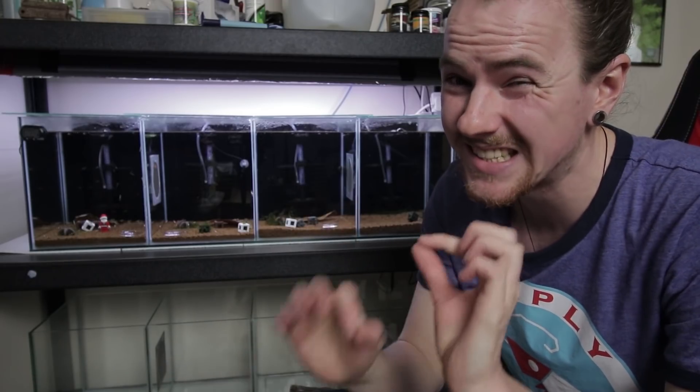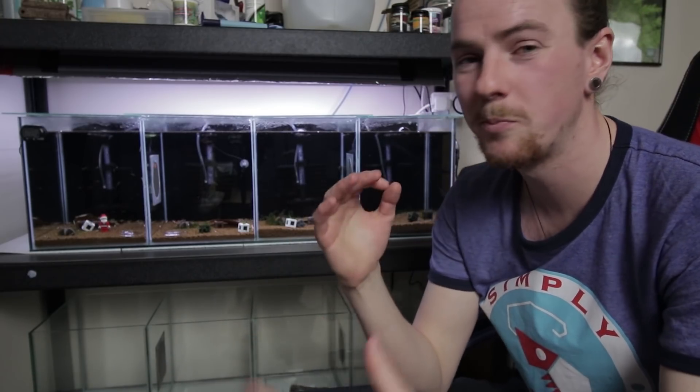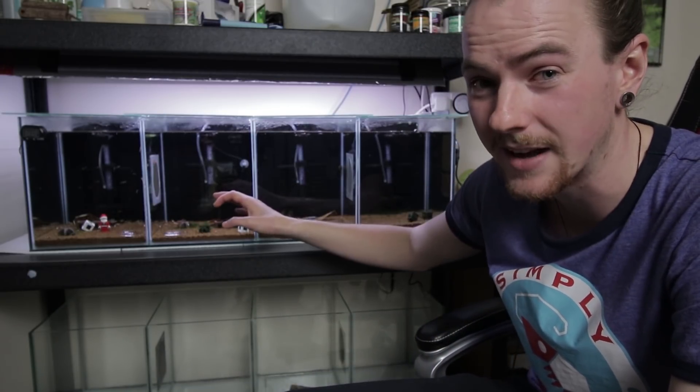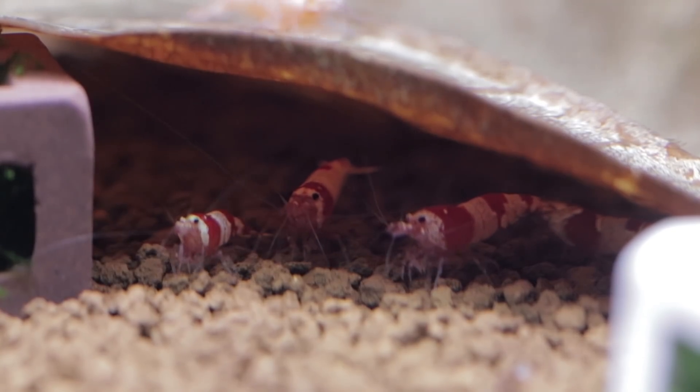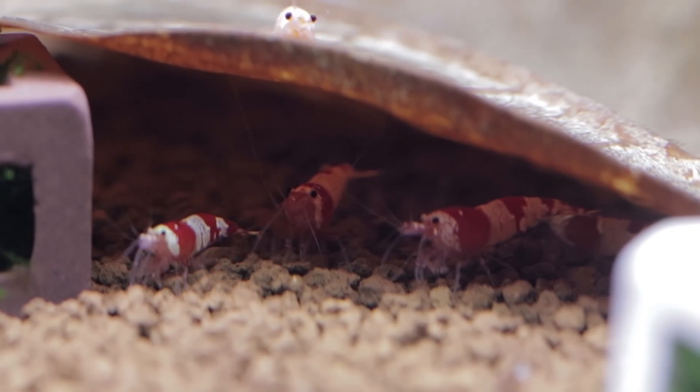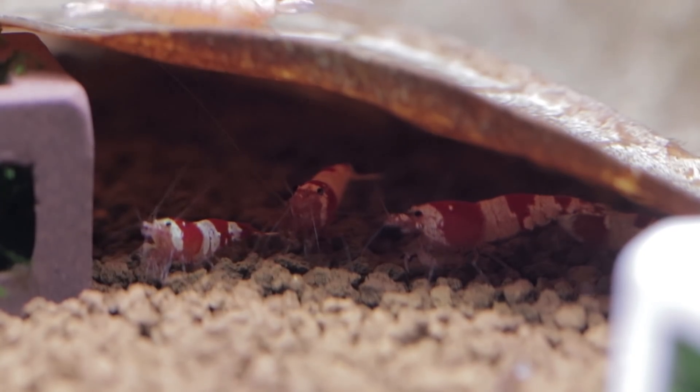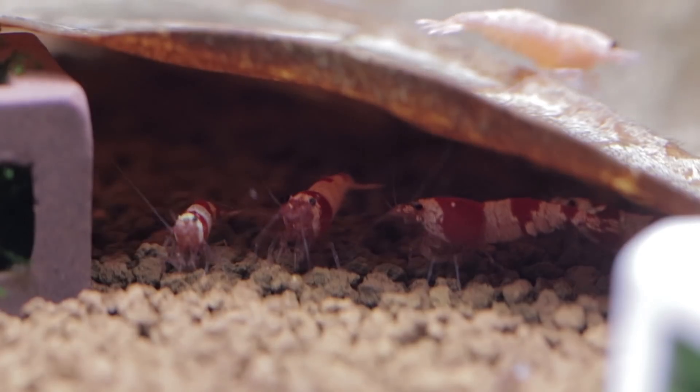However, there is a slight problem to this whole babies running back and forth between the systems and that is the crystal reds and crystal blacks. Now, my crystal red shrimp, they are actually at the moment to this day breeding true. So I'm only actually getting crystal red offspring off of them.